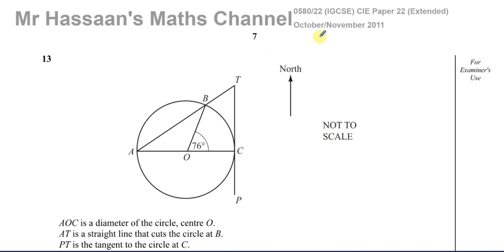This is question number 13 from October-November 2011, paper 2, variant 2, the 0580 syllabus. Here we have this circle, we have a north line. It says AOC is a diameter, so that means it's a straight line and it goes through the center of the circle, center O. AT is a straight line that cuts the circle at B. PT is the tangent to the circle at C.